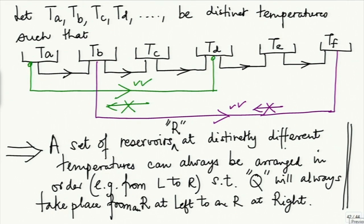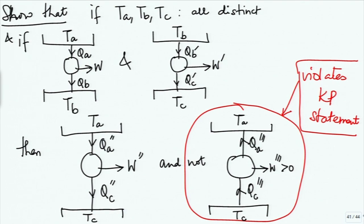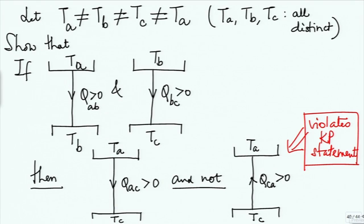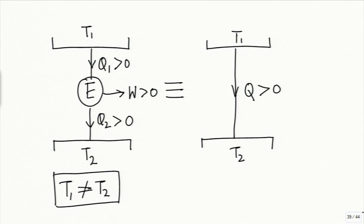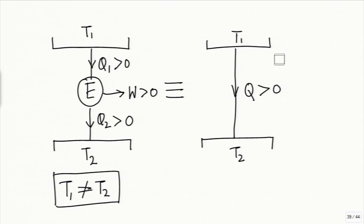Now we can go back and say that these reservoirs are arranged from higher temperature reservoir at the left to lower temperature reservoirs at the right. Using the same definition, our 2T heat engine will work only when it absorbs heat from a higher temperature reservoir and rejects heat to a lower temperature reservoir. And heat will be transferred from a higher temperature reservoir to a lower temperature reservoir — but that is the definition of higher temperature and lower temperature.